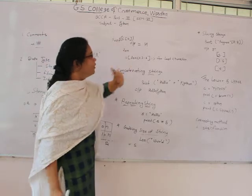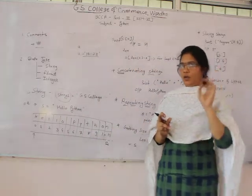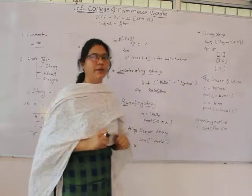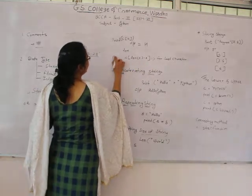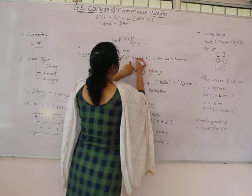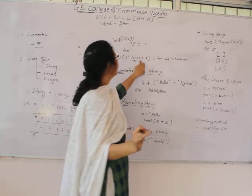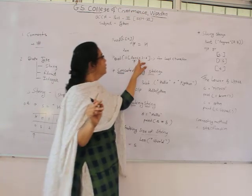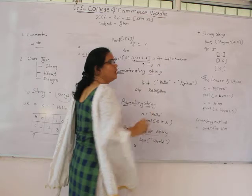To retrieve the last character of the string when we don't know the length, we write: print S[len(S) - 1]. Here len(S) gives the length of the string, and minus 1 is used because indexes start from 0. This manipulation gives us the last character of the string.